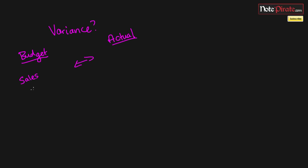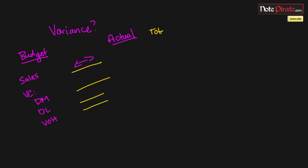There are going to be many different types of budget items like sales revenue, variable costs like direct materials, direct labor, and variable overheads, since we need to budget all our incoming revenues and possible expenses. The difference between the budget and the actual amounts for each one is going to be a separate total variance — total sales variance, total materials variance, total labor variance, total variable overhead variance, and so on. For each total variance, we can split it further into two sub-variances: the price variance and the usage variance.